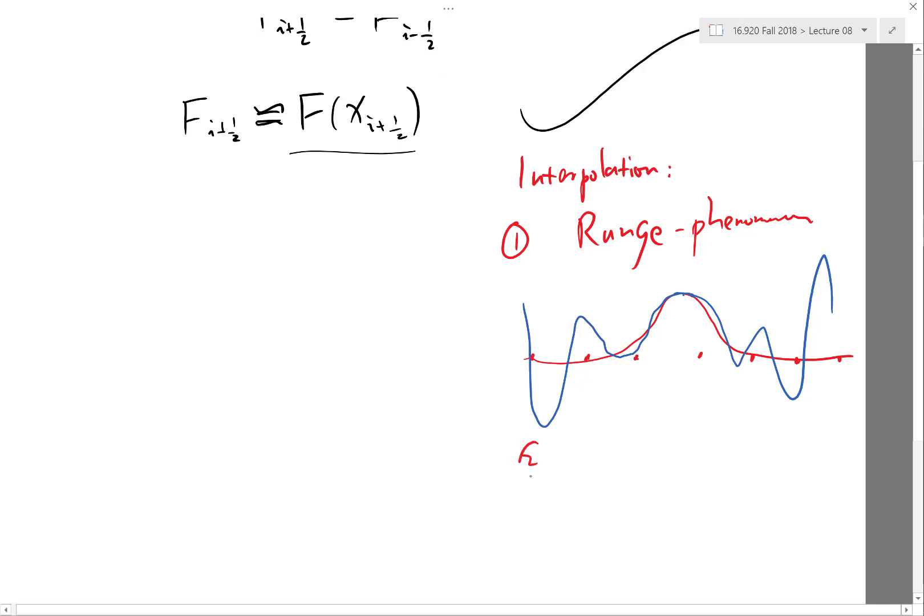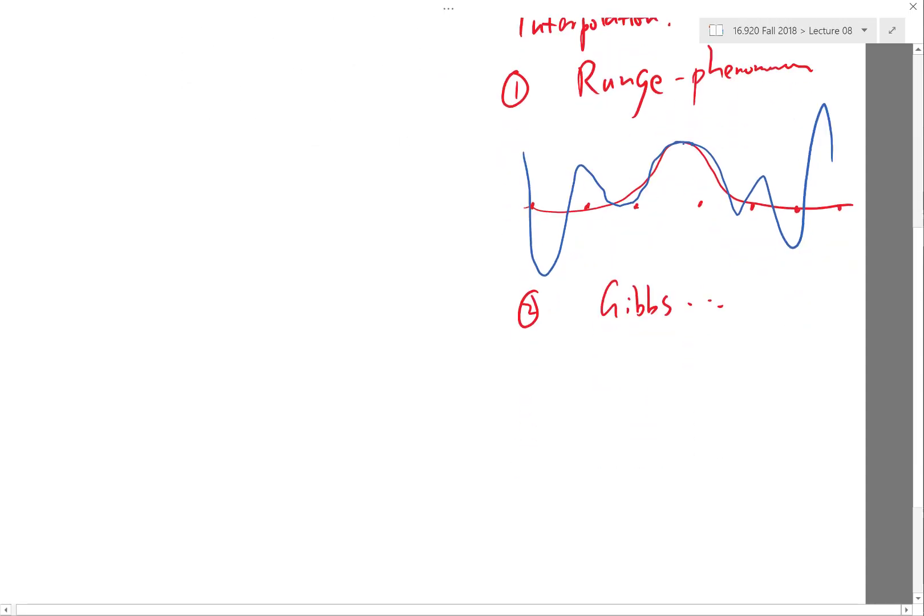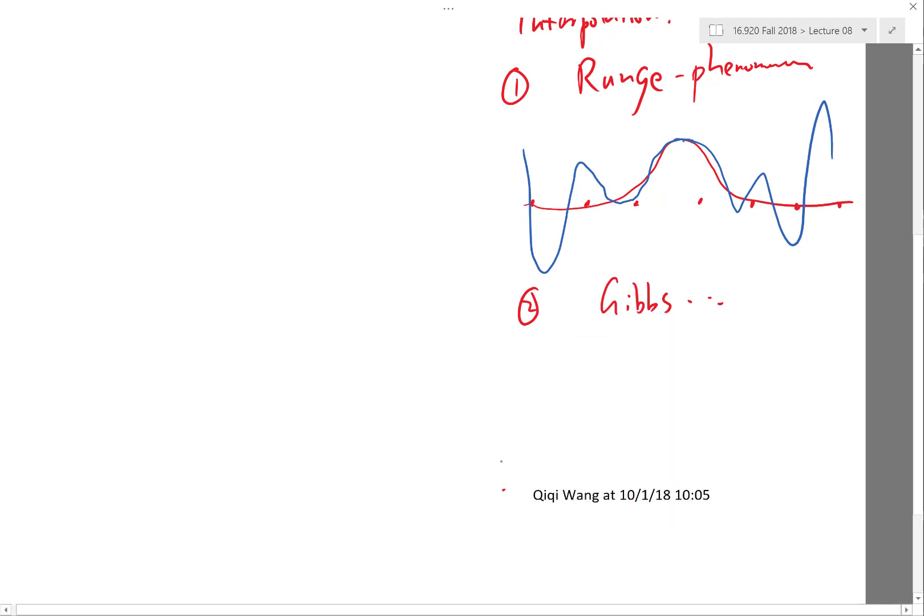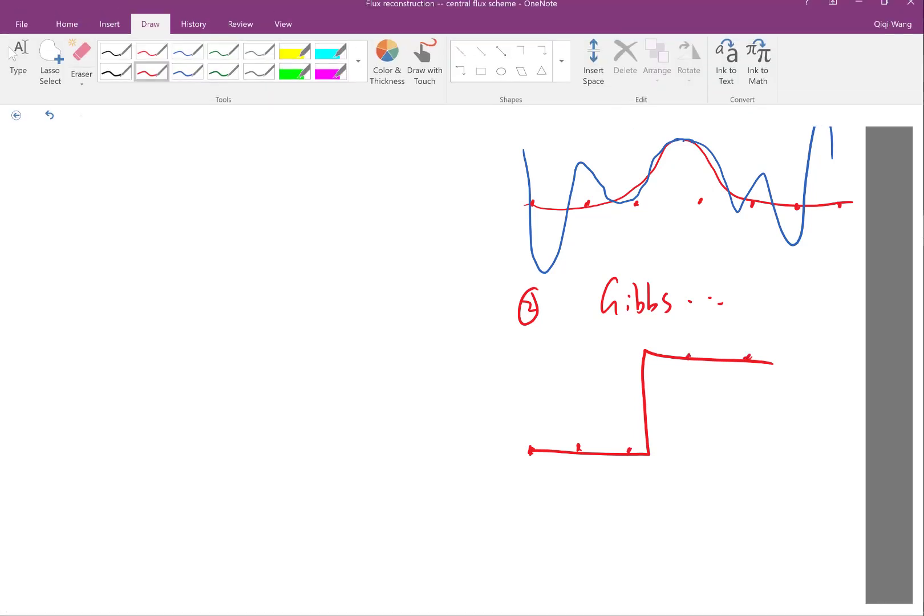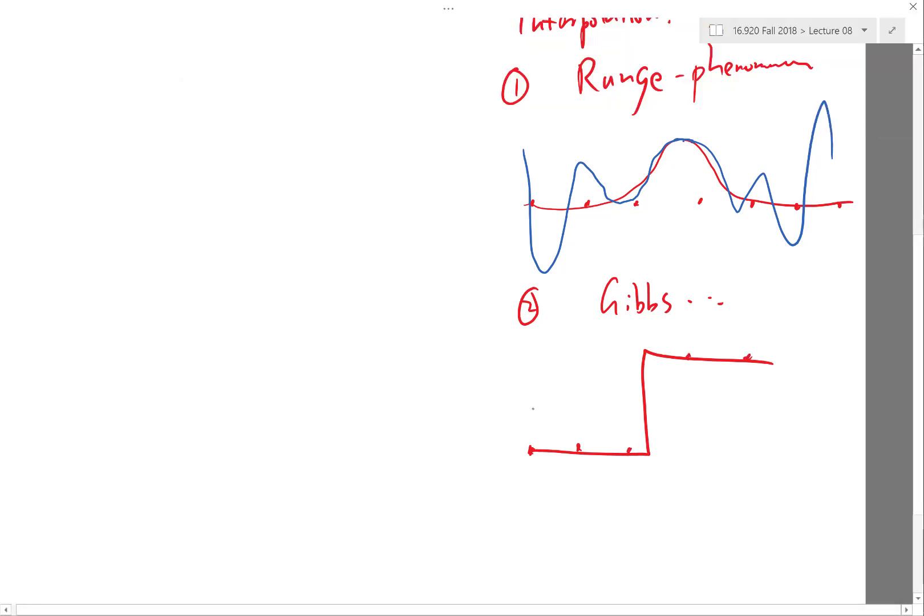And another phenomenon is called the Gibbs phenomenon. And the thing about Gibbs phenomenon is that if you have a discontinuity and you interpolate over finite grid points, the resulting interpolation is going to be something like you do fine in many circumstances,